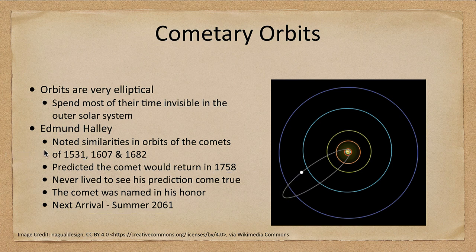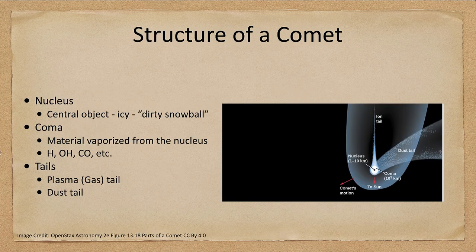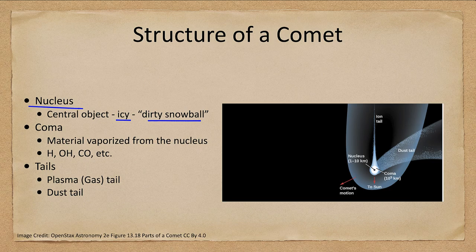What is the structure of a comet? A comet has a nucleus which is the central portion — a ball of ice, sometimes called a dirty snowball. That is the material of the comet; everything comes from there.